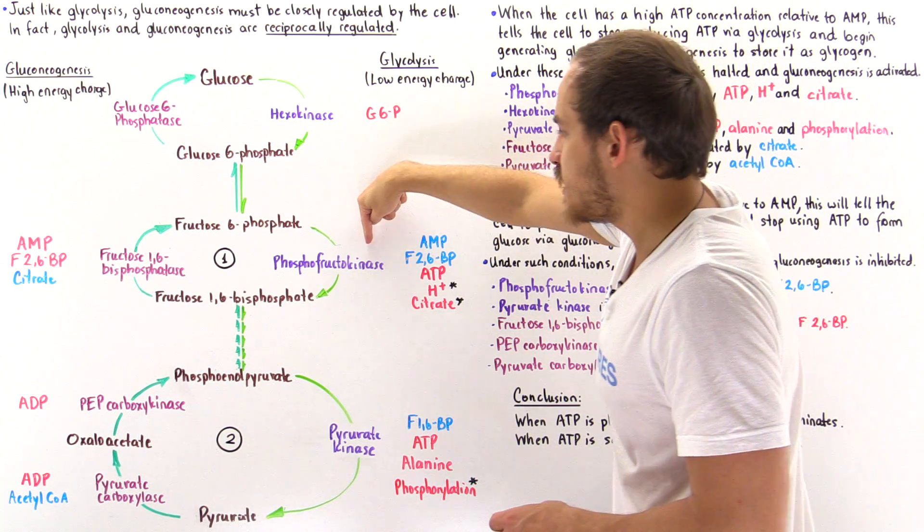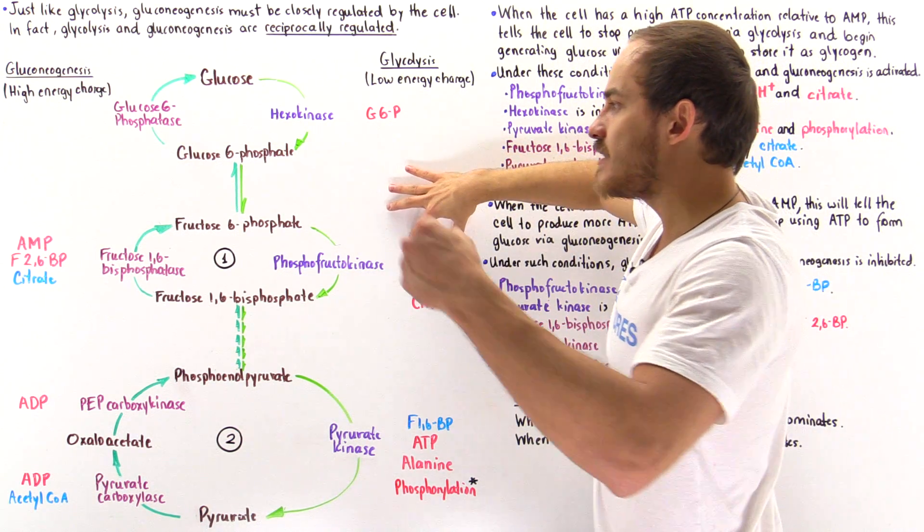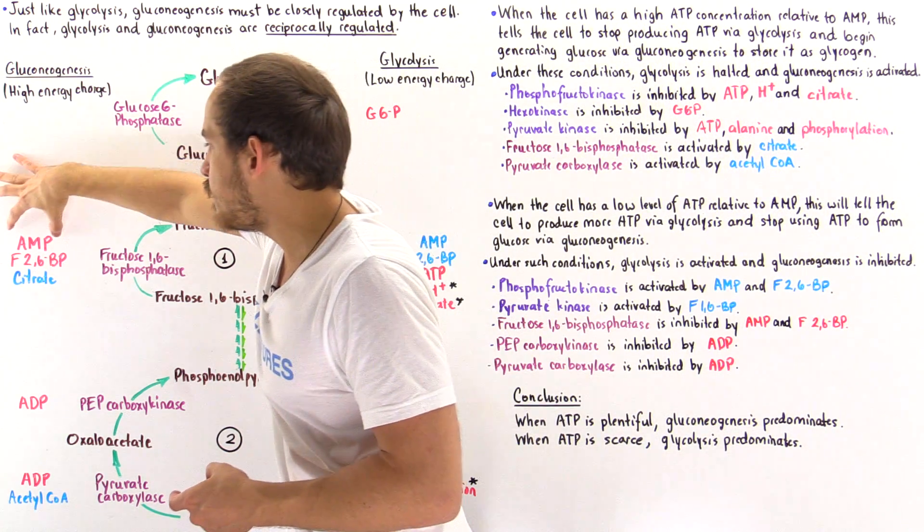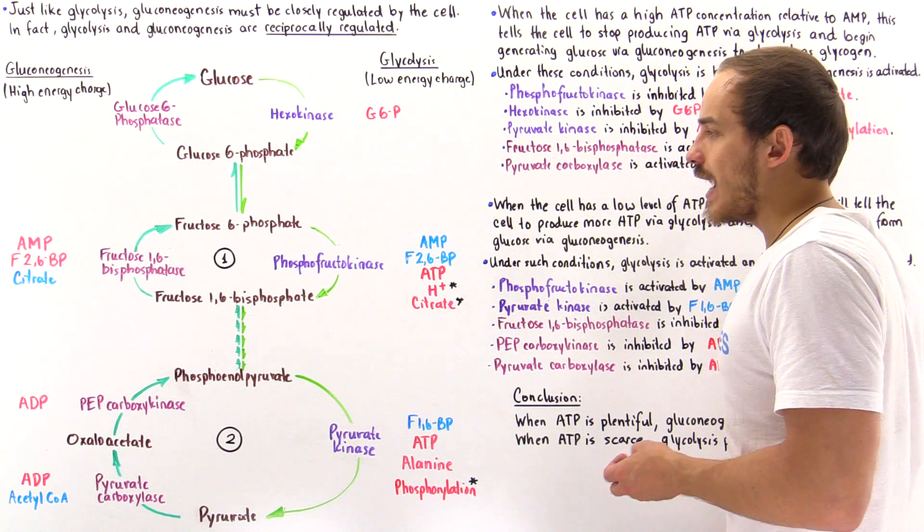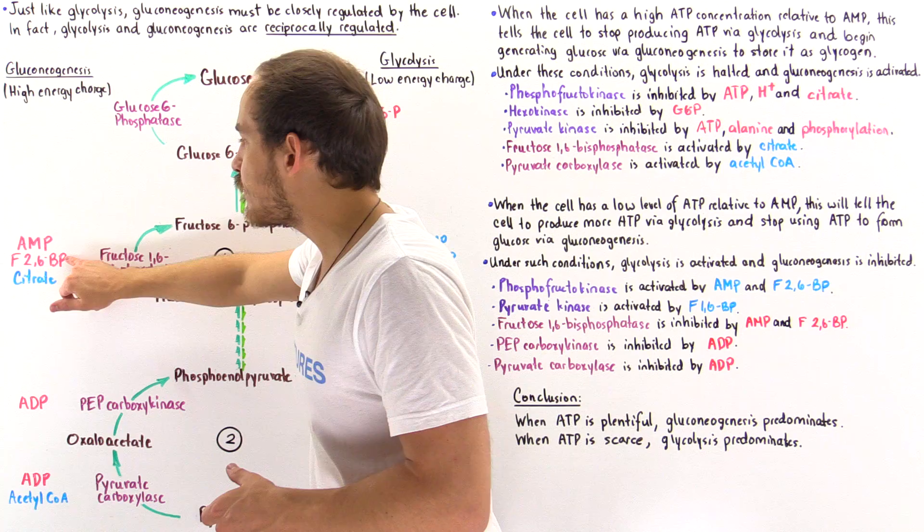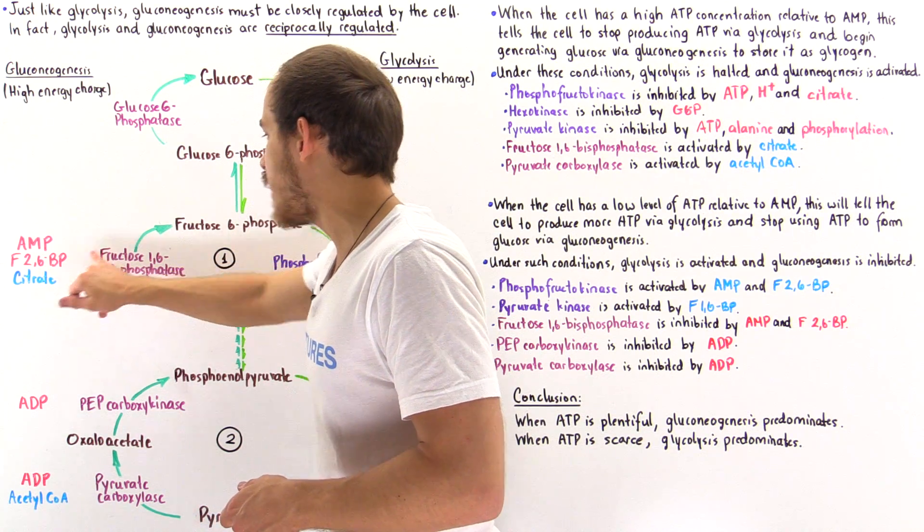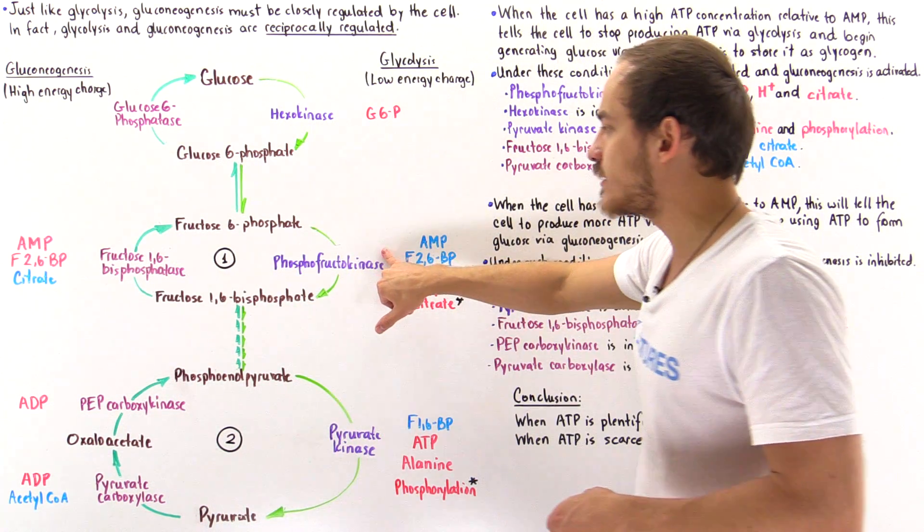In this particular case, if we have lots of AMP, the same AMP that inactivates this actually activates phosphofructokinase. On top of that, the same fructose 2,6-bisphosphate that inactivates this actually activates this.